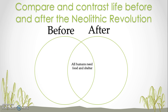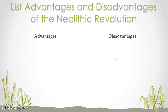In your notebooks, you are going to create a Venn diagram like the one you see here, and you will compare the lifestyle of humans before and after the Neolithic Revolution. Things that both groups had in common go in the middle, and the differences go on each side. When you are finished with the Venn diagram, you will be given two readings, and using the information from those readings, you will create a T-chart with the subheadings advantages and disadvantages, and list examples from those readings.